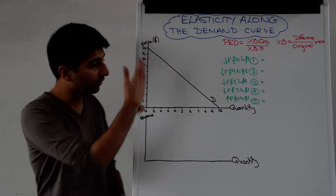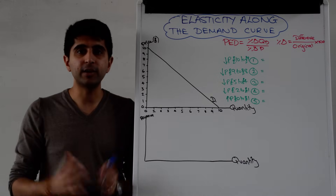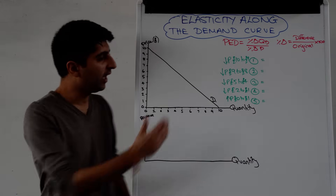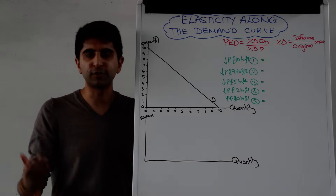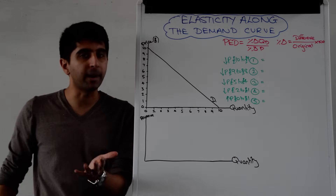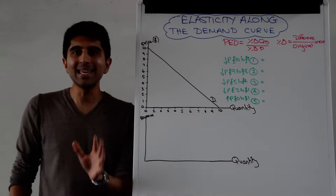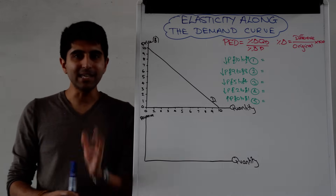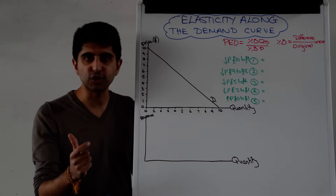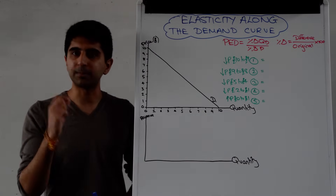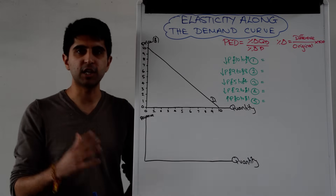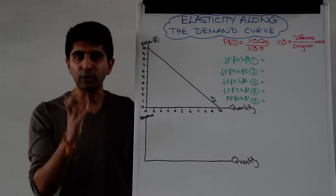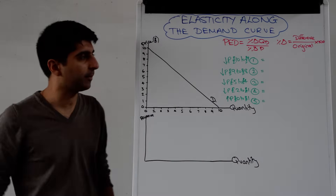The gradient along the demand curve is always going to be the same — it's just the slope of the line. If we draw a linear demand curve downward sloping, the gradient will always be the same number. But elasticity of demand is not the gradient. Elasticity of demand looks at percentage changes in quantity demanded and percentage changes in price, which gradient does not. Therefore, elasticity will vary along the demand curve.